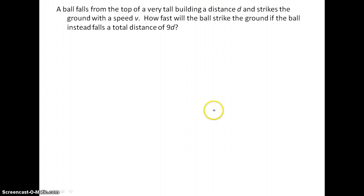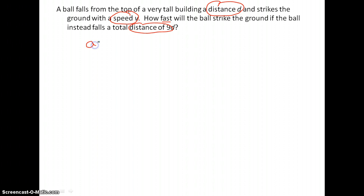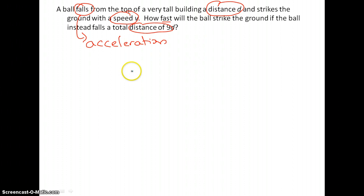One more: a ball falls from the top of a very tall building a distance d and strikes the ground with speed v. How fast will the ball strike the ground if it instead falls a total distance of 9d? What's being left out? Acceleration — because the ball is falling. So we need a formula relating acceleration, speed, and distance.